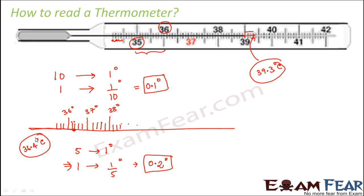Whenever you read a clinical thermometer, first determine how much one short line represents. If one short line is 0.1 degree, read accordingly; if it is 0.2 degree, read accordingly. Most clinical thermometers use the Celsius scale, but many also use the Fahrenheit scale, where long lines indicate either one degree or 0.5 degree intervals. For example: a long line at 37, another at 37.5, another at 38, another at 38.5 — long lines at intervals of 0.5 degrees.